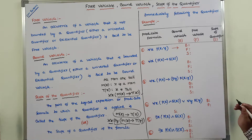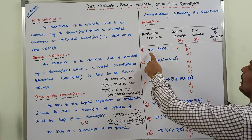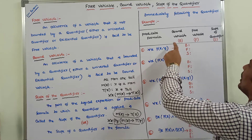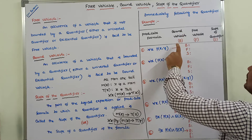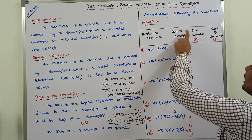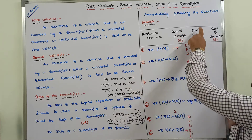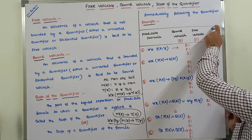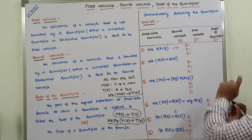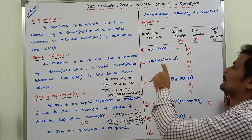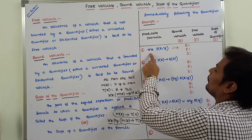In this example, here is the predicate formula. A bound variable can be denoted by b, a free variable can be denoted by f, and the scope of the quantifier can be denoted by s.